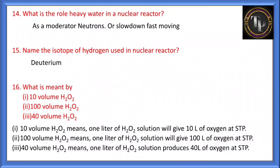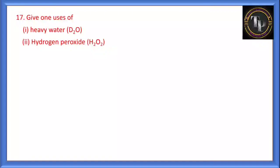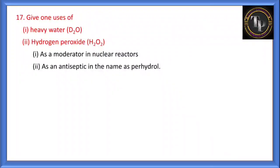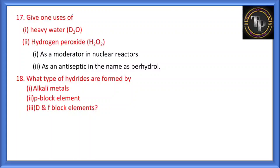Give uses of heavy water (D2O) and hydrogen peroxide (H2O2). Heavy water acts as a moderator in nuclear reactors to slow down the reaction. Hydrogen peroxide has many applications — it acts as an antiseptic under the name perhydrol, and nowadays H2O2 is also used in rocket fuels.